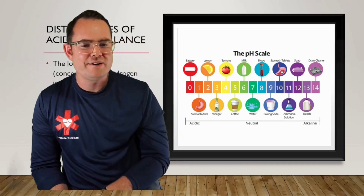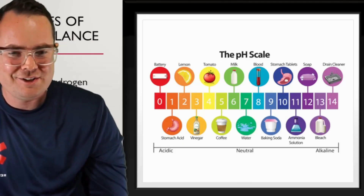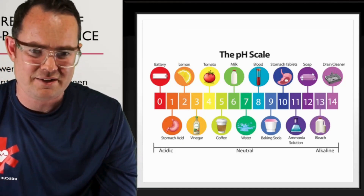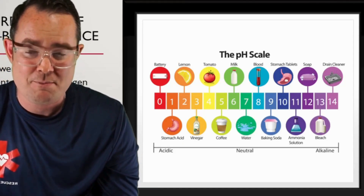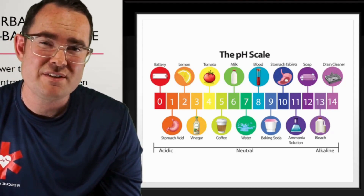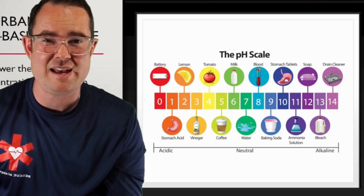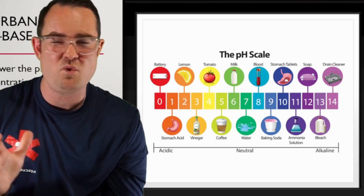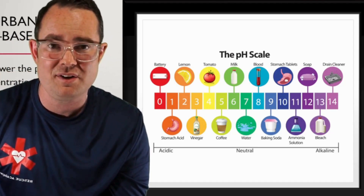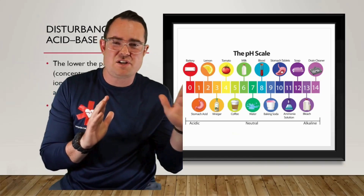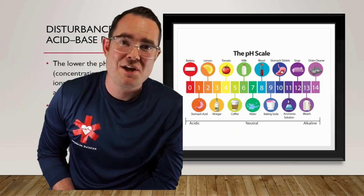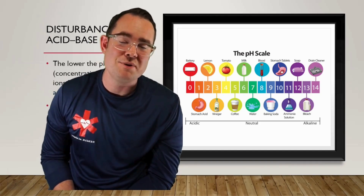Take a look at this chart here and look at some of these things that are extremely acidic. For example, battery fluid. And on the opposite side, something that is alkalotic all the way on the opposite side is drain cleaner. The farthest away on both sides of this spectrum will cause the most harm to humans.